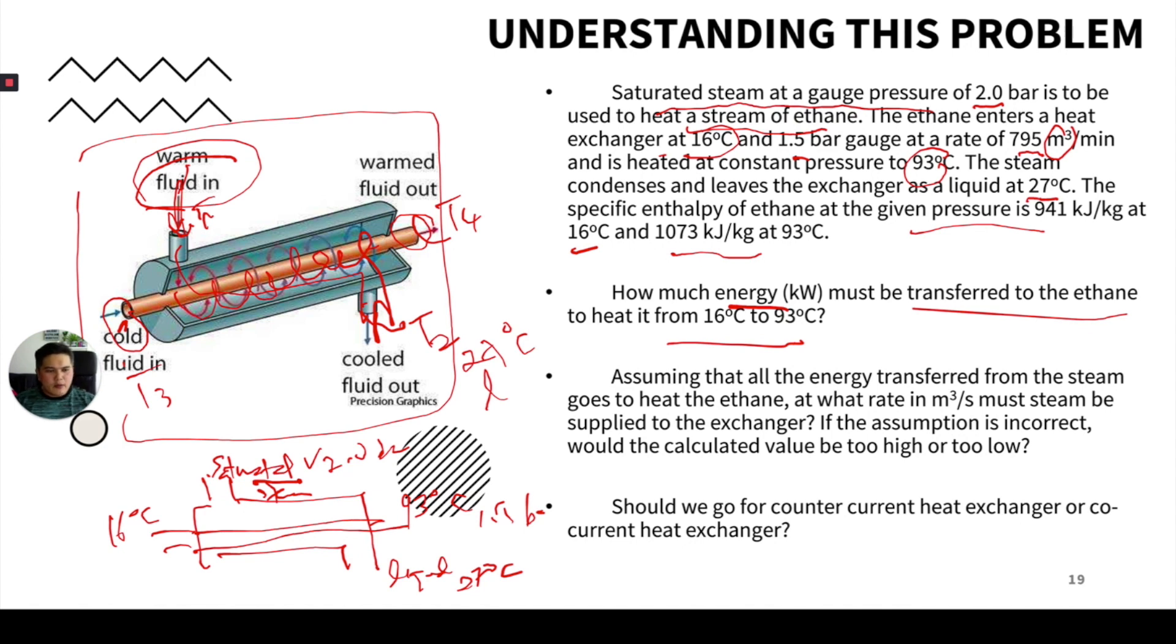At what rate in cubic meters per second must steam be supplied to the exchanger? The question is asking about what rate should it be supplied to make sure that the temperature of ethane rises from 16 to 93 degrees Celsius. If the assumption is correct, will the calculated value be too high or too low?